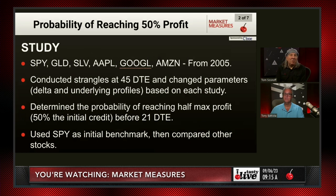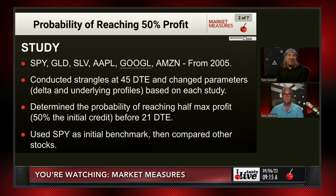We looked at a bunch of different underlyings from 2005 to present — 18 years — including SPY, gold, silver, Apple, Google, and Amazon. We conducted strangles at 45 days to expiration and changed the parameters, meaning we changed the delta and the underlying profiles based on each study. We determined the probability of reaching half of max profit, which is 50% of the initial credit before 21 DTE. We used SPY as the initial benchmark and then compared the other stocks.